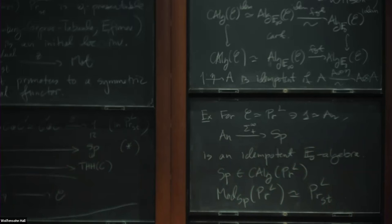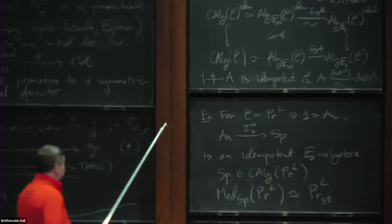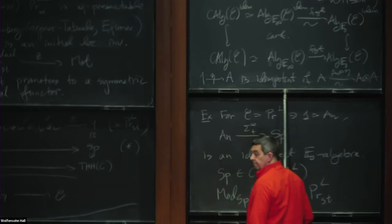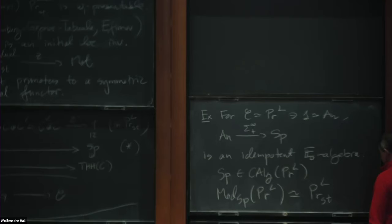So C is any symmetric monoidal in the... What is AR? That's anima. The infinity category of anima. Or the infinity category of spaces. But I think anima is better because these are not topological spaces.